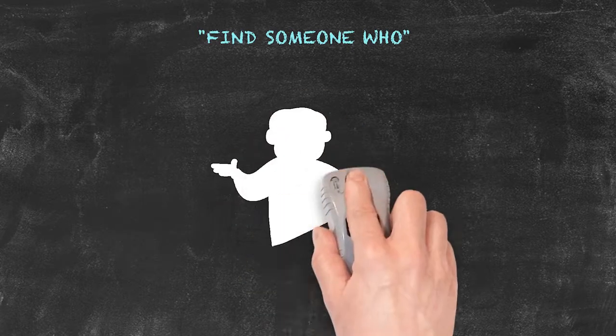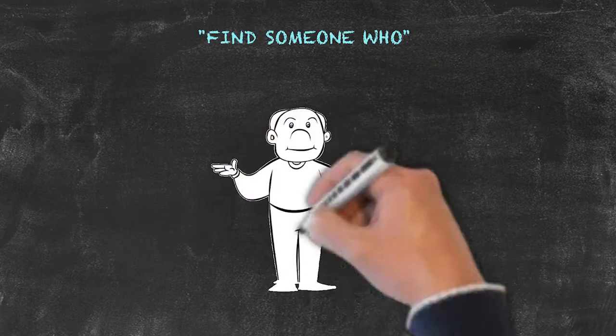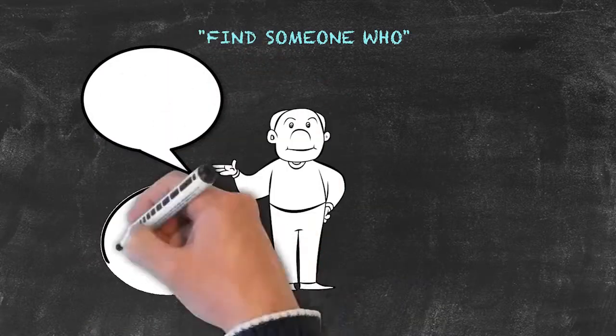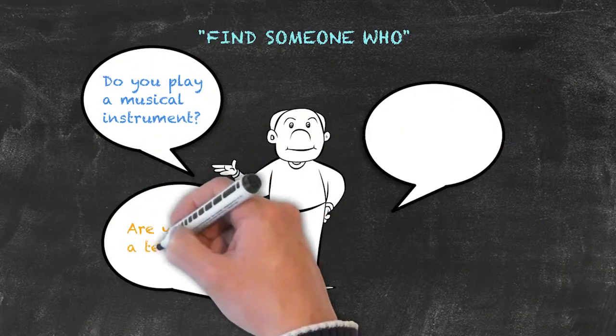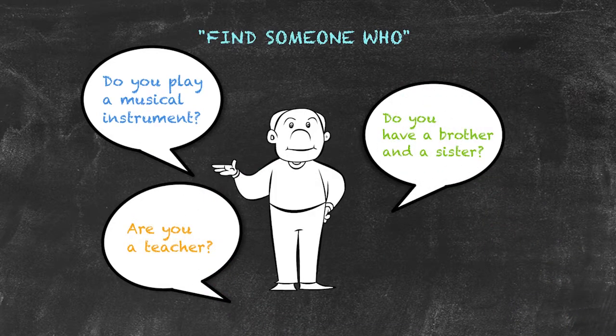This results in students going around the room asking questions in the present simple tense, such as: Do you play a musical instrument? Are you a teacher? Do you have a brother and a sister?